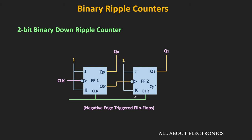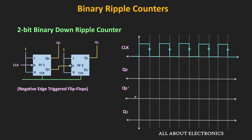Let us understand the working of the down counter circuit with the help of the timing diagram. Initially, all flip-flops are reset to 0. The output of the first flip-flop will toggle at every falling edge of the clock signal. In the down counter, Q' is connected to the clock input of the next flip-flop. Q0-bar will be exactly opposite to Q0, and acts as a clock input for the next flip-flop. At the every falling edge of Q0-bar, Q1 will toggle — initially 0, becoming 1 at the first falling edge, then back to 0 at the next.